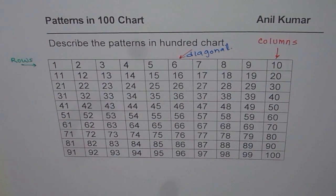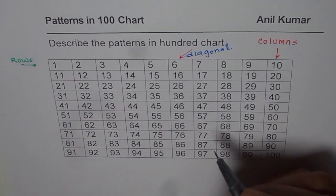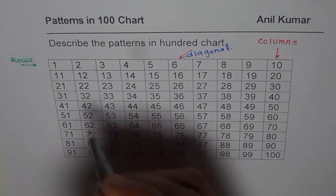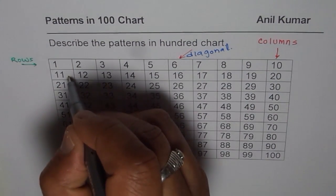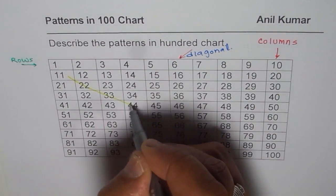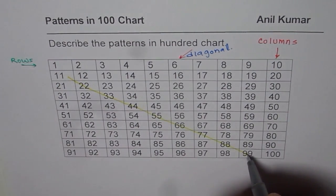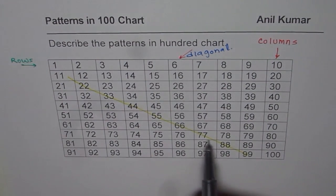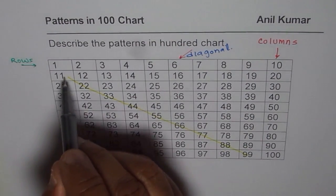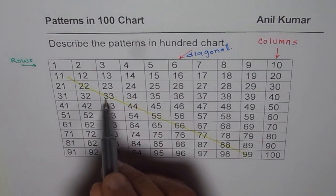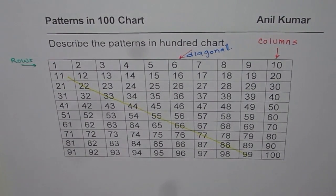Now, can you explore some patterns diagonally? One diagonal is very important. Look at this. What do you notice? The ones and tens place digits are the same: 1,1 — 2,2 — 3,3 — 4,4 — 5,5 — 6,6 — 7,7 — 8,8 — 9,9. That is correct.